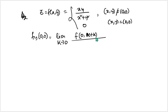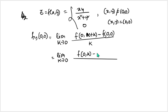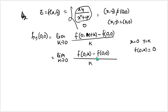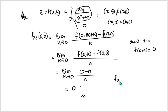So f(0, k): substituting x = 0 and y = k gives 0×k / (0 + k²) = 0. And f(0,0) = 0. So the limit becomes [0 − 0] / k = 0. Therefore fy(0,0) = 0 as well. So the partial derivatives of the given function at the point (0,0) are both equal to 0.